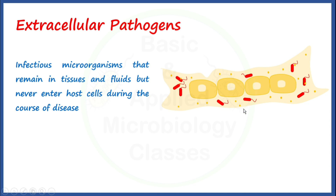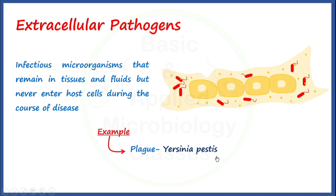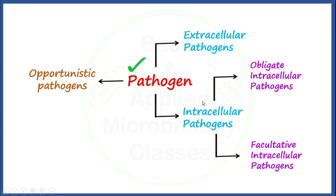An example of extracellular pathogen is Yersinia pestis, which is known to cause plague. Plague, which is also called black death, is one of the very well-known extremely virulent types of extracellular pathogens.